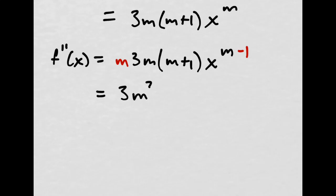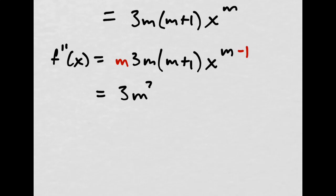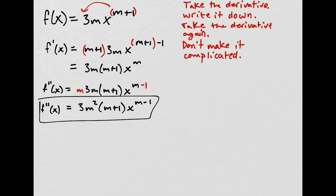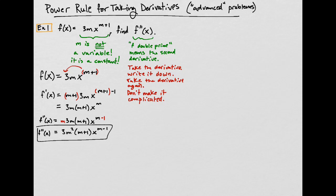It's a constant, it doesn't matter. If m was 2, then this constant would be 6 times 2, that constant would be 12. It's just some constant that I don't know. So I take the exponent, bring it out in front, and then take away 1 from the exponent. So I'll have m times 3m times m plus 1, x to the m minus 1. So 3m squared times m plus 1 times x to the m minus 1. That, my friends, is the second derivative. It's very not difficult. It looks crazy, but it's not that crazy.